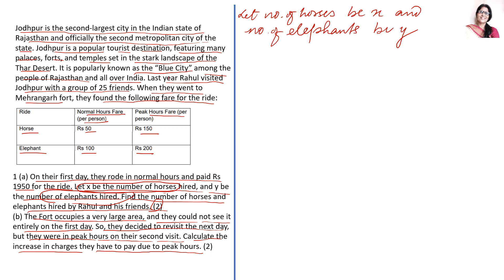First equation is Rahul visited Jodhpur with the group of 25 friends. That means they will hire some horses and some elephants but the sum should be equal to 25 because it is not allowed that two people will sit on a horse or an elephant. So this is your equation 1: X + Y = 25.